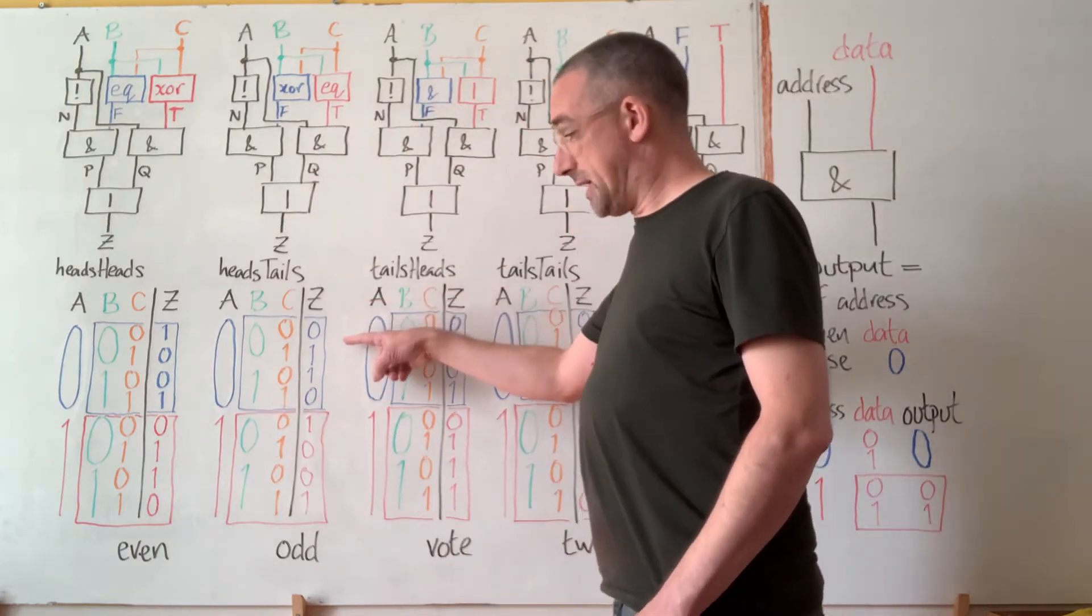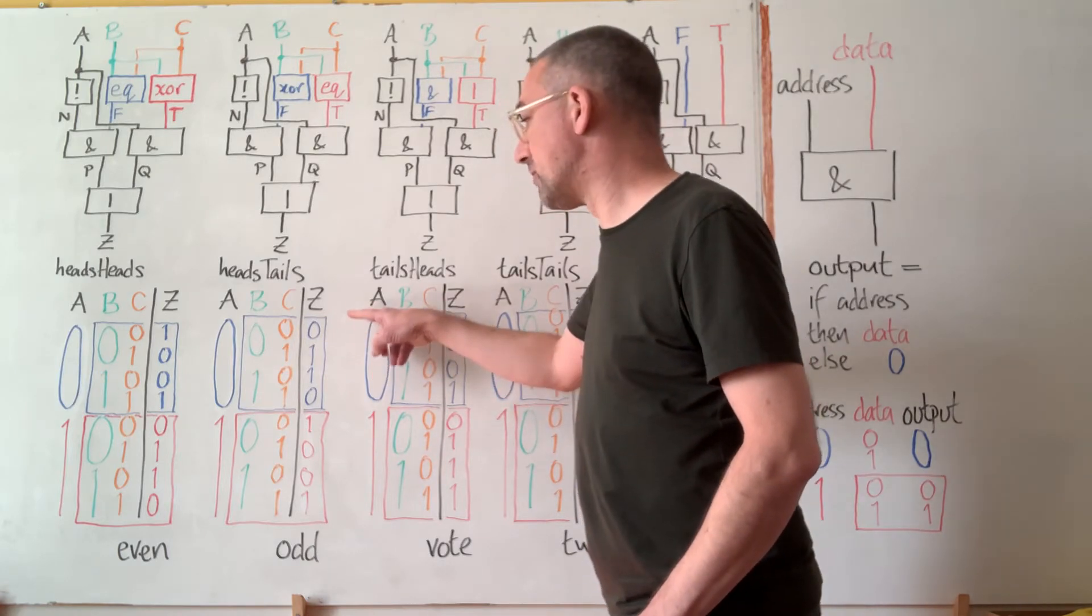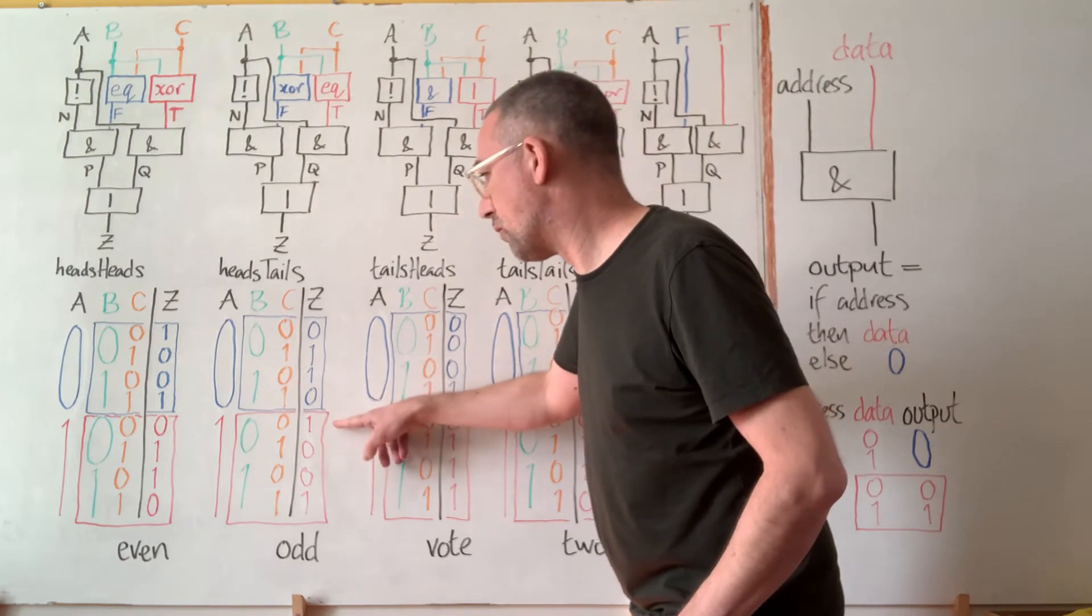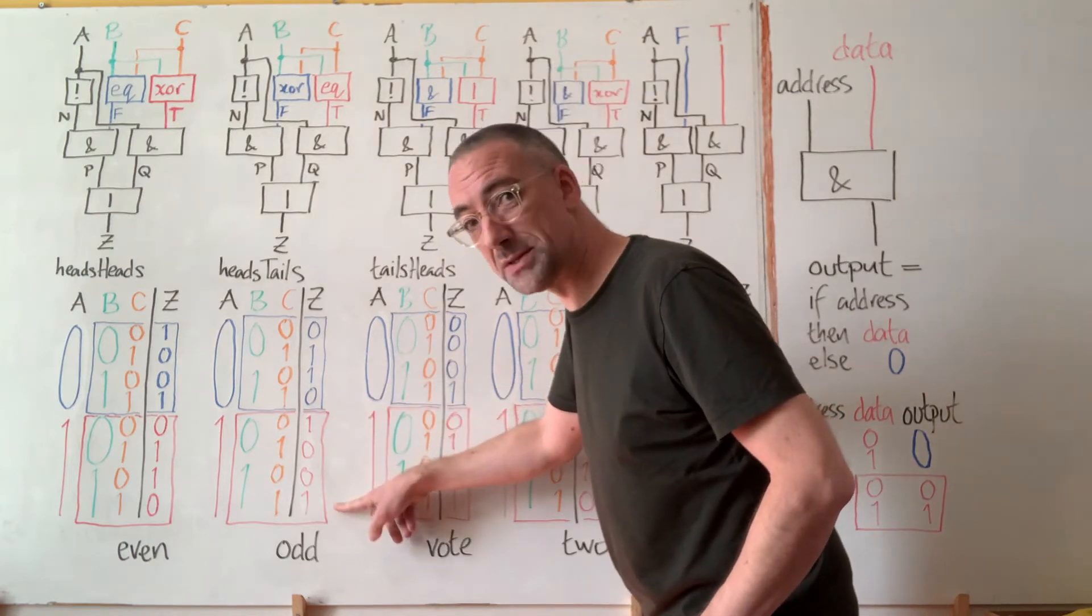Heads tails is telling us if we have an odd number of ones. You can see we have one one, one one, one one, three ones.